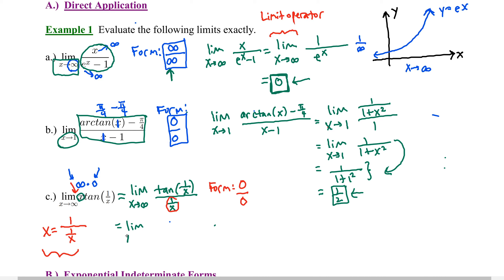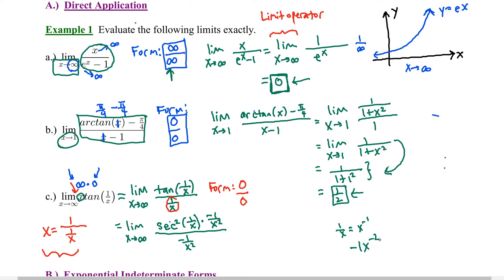To find this limit as x approaches infinity, we find the derivative of the top and the derivative of the denominator separately. The derivative of tangent is secant squared of the argument times the argument's derivative, which is negative 1 over x squared. Separately, the derivative of 1/x in the denominator—thinking of it as x to the negative 1—is negative 1 over x squared.